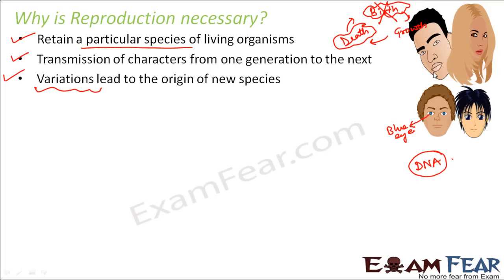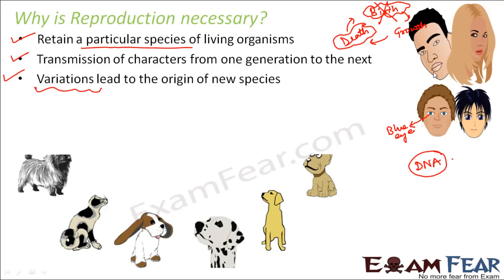When you talk about variation, you can look at the example of dogs of so many different varieties. They are all dogs, but they have so many differences — in appearance, fur type, color, shape, size, and size of the ears. Each of them looks so different from the other. These variations are because of small, small changes. Small changes, one at a time, over a period of time, when multiple changes come together, you get a new species altogether, a new animal altogether. That is why in dogs you have so many different varieties, and that is how they all started existing.